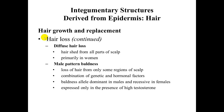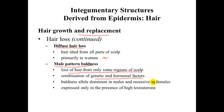With hair growth, you can also get loss and replacement. Diffuse hair loss is hair shed from all parts of the scalp, common primarily in women. Male pattern baldness is the loss of hair from only some regions of the scalp, resulting from a combination of genetic and hormonal factors. The baldness allele is dominant in males and recessive in females, and it is expressed only in the presence of high testosterone.